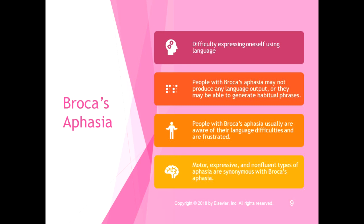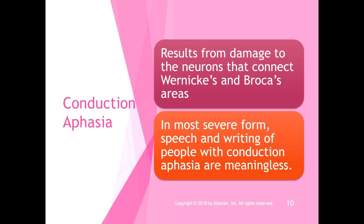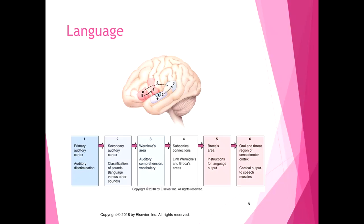Broca's aphasia is difficulty expressing oneself using language. People with Broca's aphasia may not produce any language output, or they may only generate small or habitual phrases. Unlike Wernicke's aphasia, people with Broca's aphasia are usually aware of their difficulties and are frustrated by it — they can't get the words out. It's also called motor aphasia, expressive aphasia, or non-fluent aphasia. Wernicke's aphasia is often called fluent aphasia or receptive aphasia.